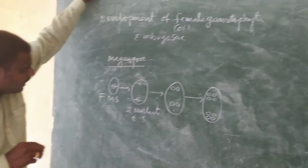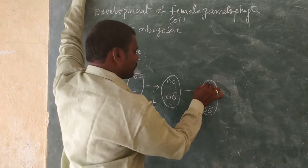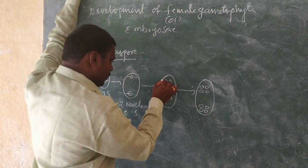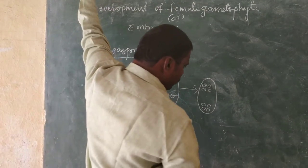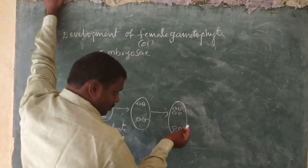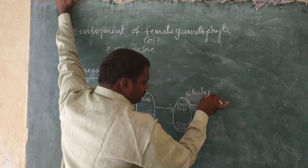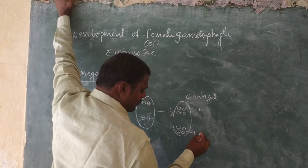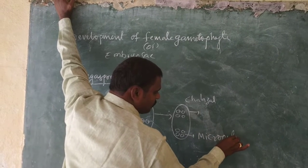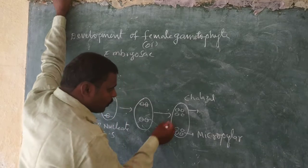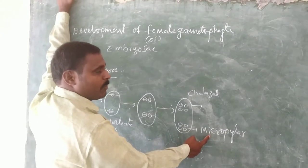An important fact: up to the completion of all nuclear divisions, there is no cytokinesis. After formation of the eight-nucleate embryo sac, four nucleates are present towards the chalazal end and the remaining four nucleates are present towards the micropylar end.